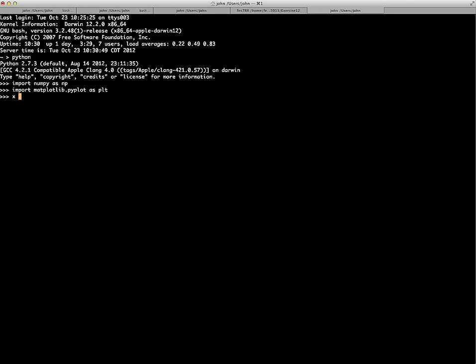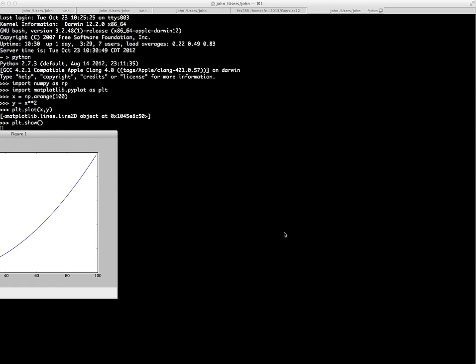And then we can just say, for instance, x equals NP arange 100, y equals, we're just going to plot x squared. And so then we say PLT plot x, y, PLT show. And there's the figure.